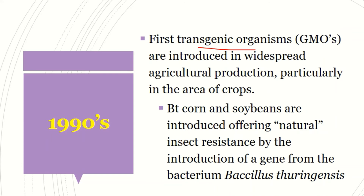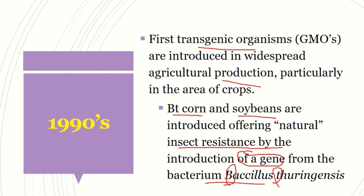In the 1990s, we had more advancements in agricultural production. For example, BT maize and soybeans were introduced, offering natural insect resistance. They had a gene from a bacterium called Bacillus thuringiensis (BT). When this gene is inserted into corn and soybeans, if the bacteria were to infect the crop, since we have already inserted a resistant gene, our BT maize and soybeans are going to survive the bacteria.